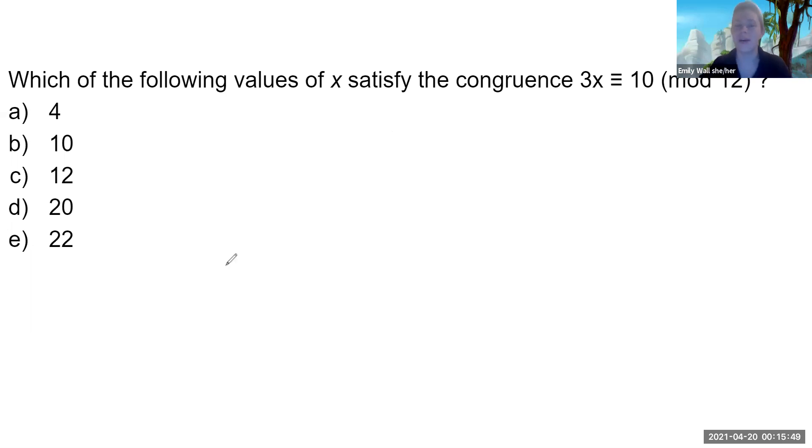One thing I want to point out is, this is a multiple choice question. It's not wrong if you just try out all these answer options. Like for part A, 3 times 4 equals 12. That's definitely not equivalent to 10 mod 12. So we could knock out A pretty fast. B also goes pretty fast. But sometimes the numbers get bigger, so we don't want algebra mistakes. But it is a valid method.